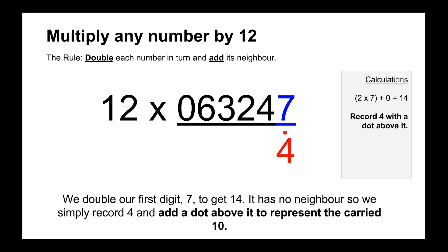And then we do 7 doubled or 7 times 2 is 14 and it doesn't have a neighbour on the right so we just add the 4. We'll record the 4 and then we add a dot above the 4 to represent the 10.